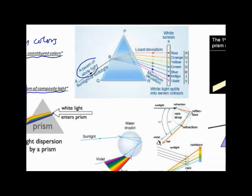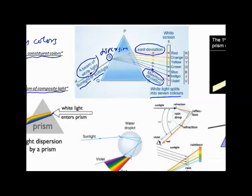When a beam of white light — such as sunlight or bulb light — is incident on a triangular glass prism, it disperses and breaks up into constituent colors on a white screen, ranging from violet to red. Red is the color with the least deviation, while blue has the maximum deviation. Blue has a shorter wavelength, whereas red has a higher wavelength and therefore deviates least, while blue deviates most.